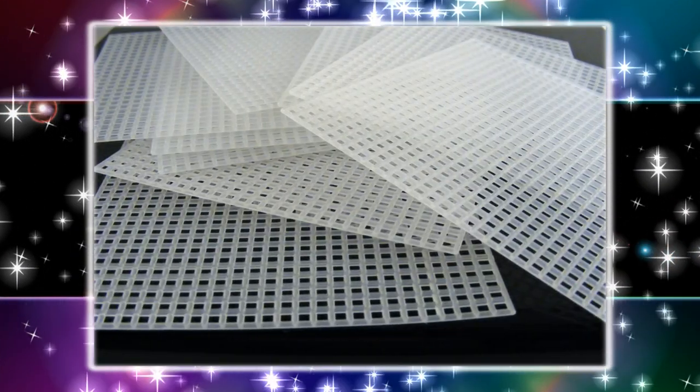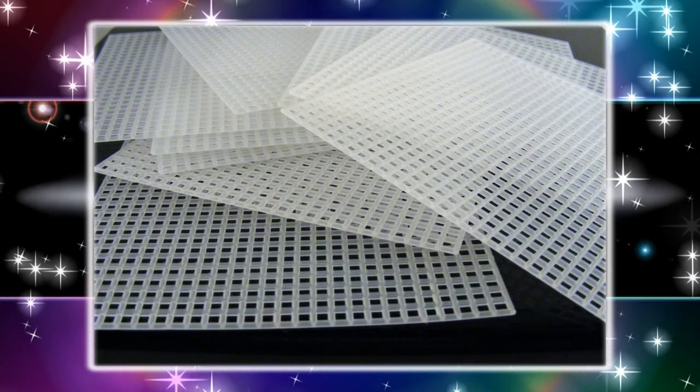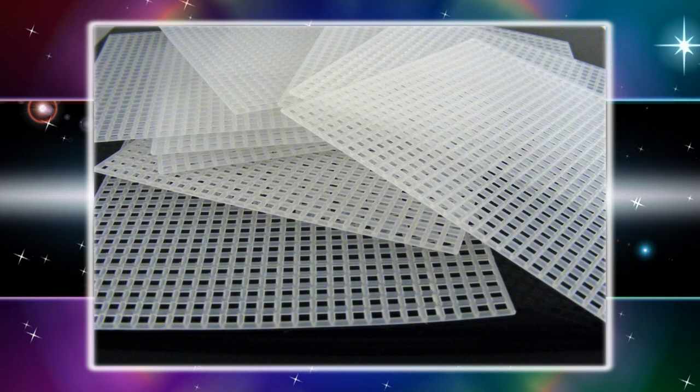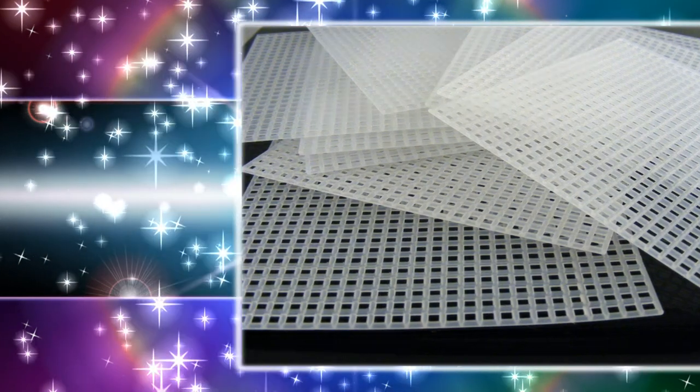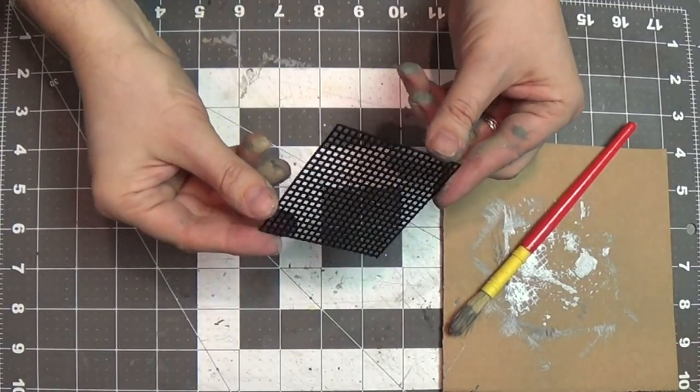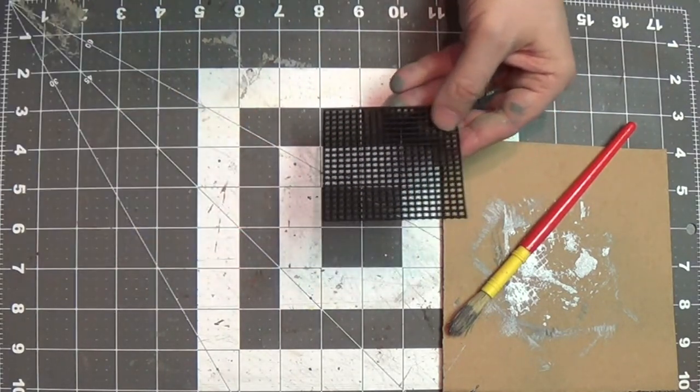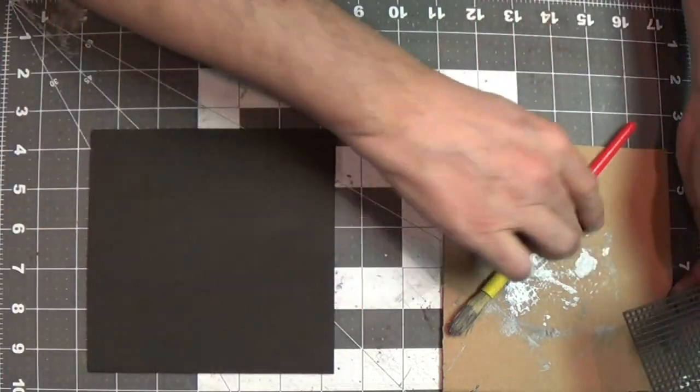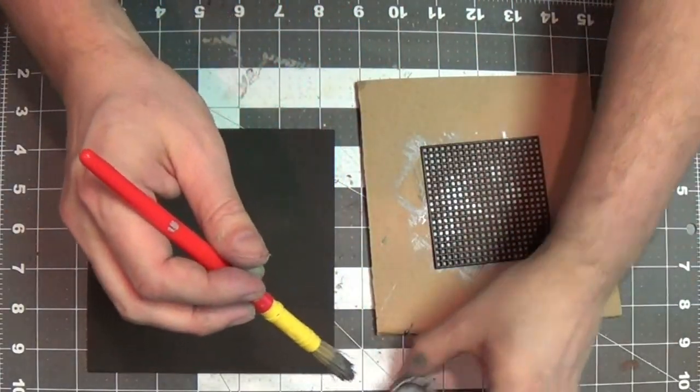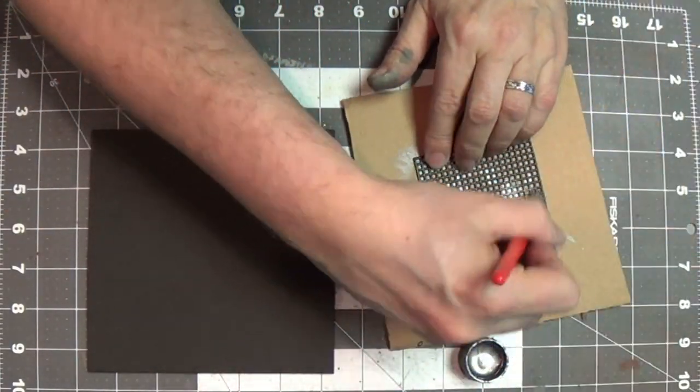For this project you're going to need cross stitch mesh. It's very inexpensive, you can pick it up in just about any craft store. And what we're going to do is we're going to cut it in a 3 inch square. And this will be the deck grading on our tiles. So just super easy. Now this is a black colored mesh I have. It doesn't matter what color it is.